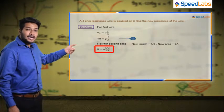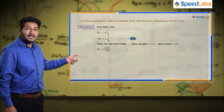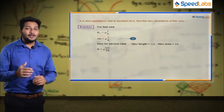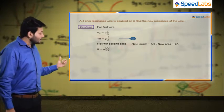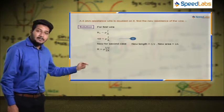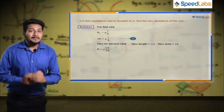Here you will have L upon 2 and area will be 2 times A. So let us assume that the new resistance is equal to rho into L upon 2 divided by 2A.